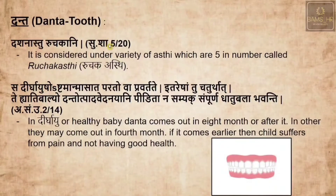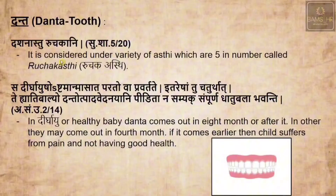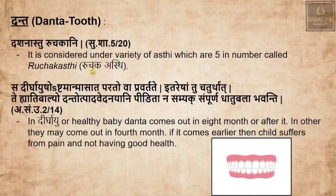Danta means tooth or teeth. It is one of the Ashti types — among the Panchastis, it is listed as Dashanasthi, Ruchakani. It is considered under the variety of Ashti, which are five in number. The Ruchakasthi is nothing but Danta. Dhirgayushu Ashtanmasaastata paratovapravartate — meaning in a healthy baby, the teeth get erupted around the eighth month.